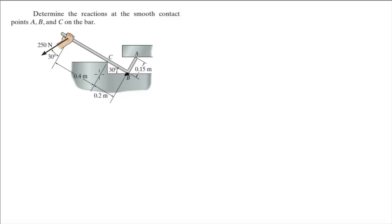You have the reaction at B going straight up because the surface here is flat. Reaction at A going straight down. And the reaction at C, since it's at a corner, is going this way, because of this surface right here. You always gotta draw the lines — it makes it easier to draw the reactions, otherwise you're gonna get confused. That's just the hardest part: drawing the right free body diagram.